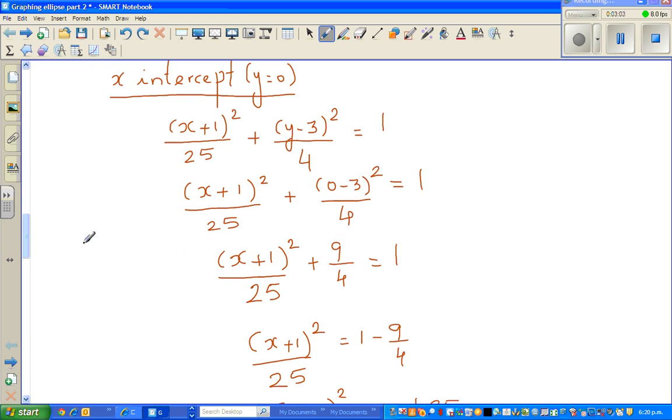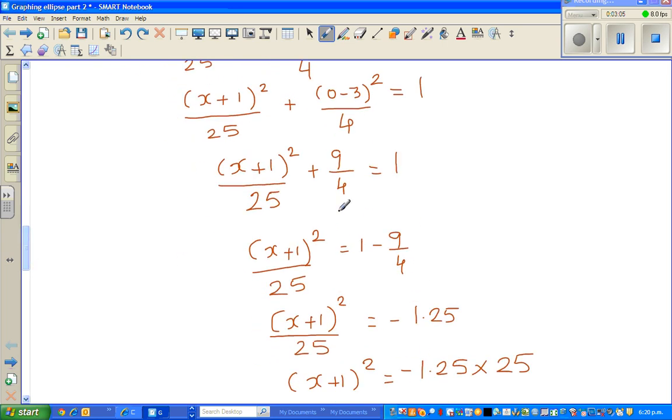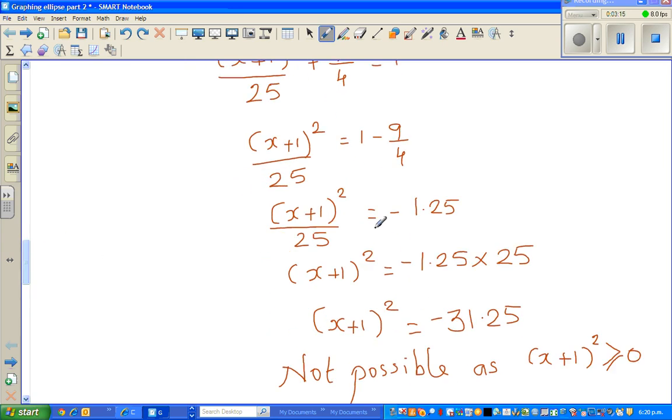And I have taken over 9 quarters from both sides, so 1 minus 9 quarter, you can check that in the calculator. And then you can cross-multiply or I've multiplied 25 to both sides. If you multiply 25 to both sides, you end up with this. Now, from here, you have to use your logic.